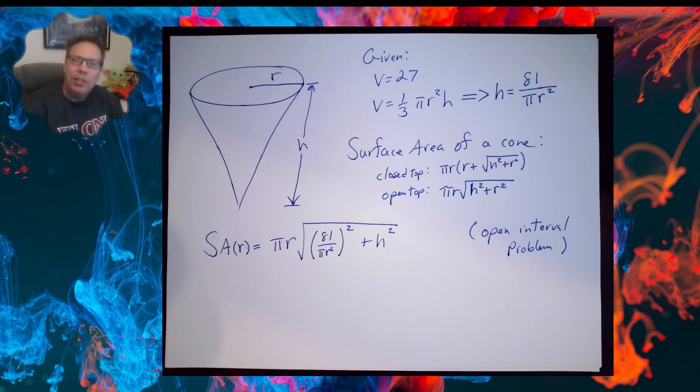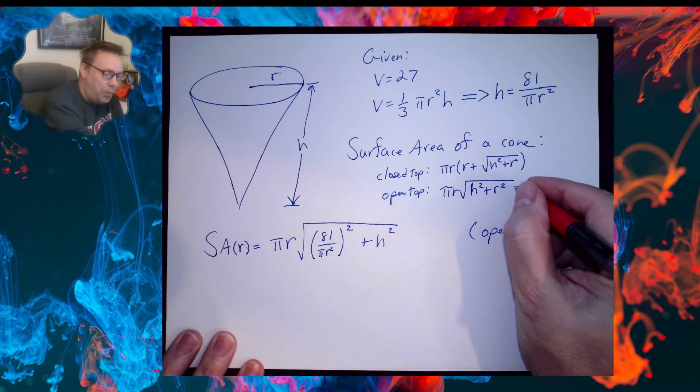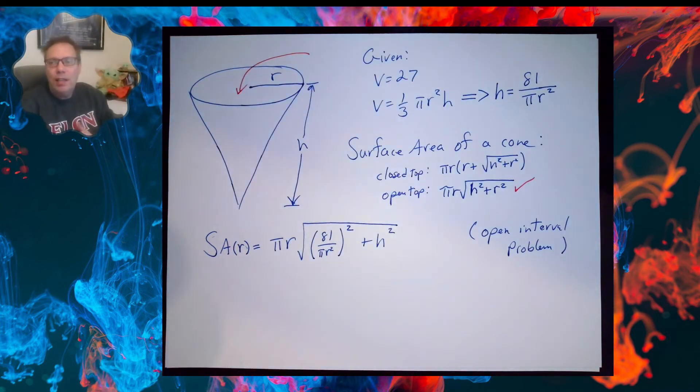Now the surface area of a cone - there's a closed top and an open top. We want the open top formula, we want this one, because we want to put water inside the cup. We don't want a lid on this thing.